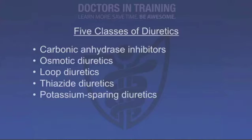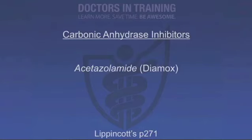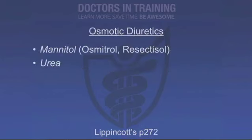Now let's talk about the five classes of diuretics and rewind back to Bowman's capsule. First, we're going to talk about carbonic anhydrase inhibitors — the primary one being acetazolamide. The second class are the osmotic diuretics, which also work in the proximal convoluted tubule along with the carbonic anhydrase inhibitors, and also have a role in the descending loop of Henle. The primary osmotic diuretics are mannitol and urea.